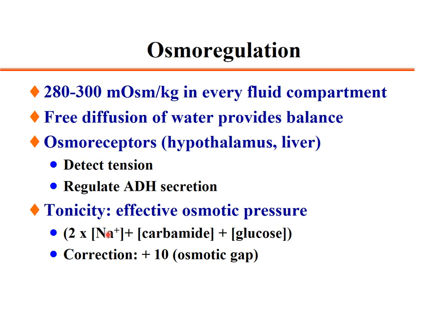Tonicity or effective osmotic pressure can be calculated: sodium is the major component, taken twice because sodium forms a strong acid-base salt with chloride. Carbamide or blood urea nitrogen and glucose are the other substances used in the osmolality calculation.